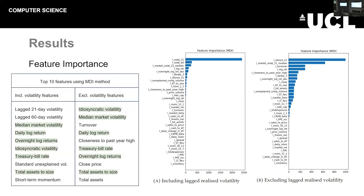Part of my results involved investigating feature importance. A key benefit of these methods is that they identify features not used in traditional approaches. Using the mean decrease in impurity method, some features identified as quite important were: treasury bill rate from the US Treasury database, overnight returns, total assets to size — which is the total assets of the firm divided by market cap — and also the median market volatility and idiosyncratic volatility.